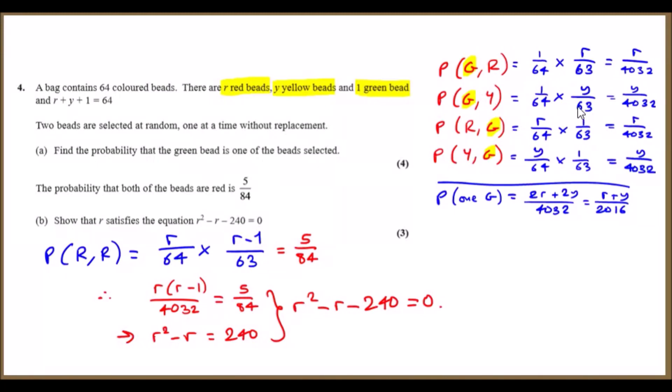Then for green-yellow, picking the green first is 1 out of 64, and then picking yellow next, we still got y yellow beads remaining because we haven't touched it, so it'd be y out of 63. Then you just repeat the rest for RG and YG.